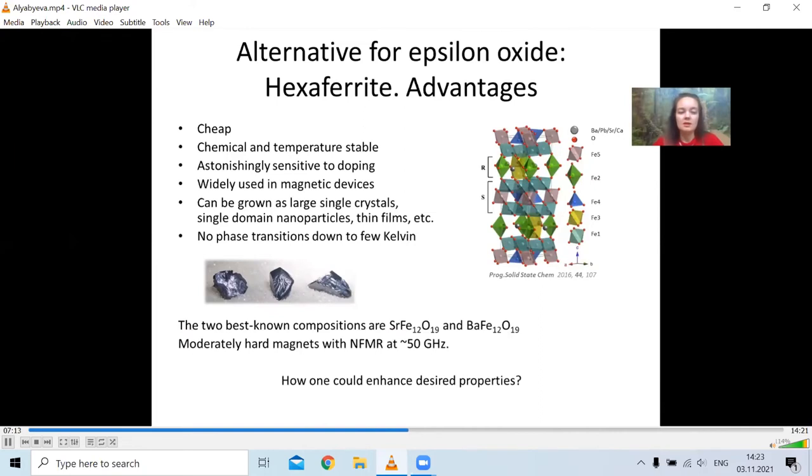And the other very attractive property is their enormous sensitivity to doping. By doping the matrix with various elements, you either can tune the particular property you need, or otherwise you can obtain the material with absolutely different physical properties. And what is listed here first, they are cheap, which is also very attractive.